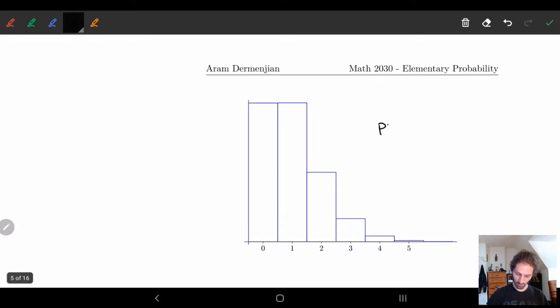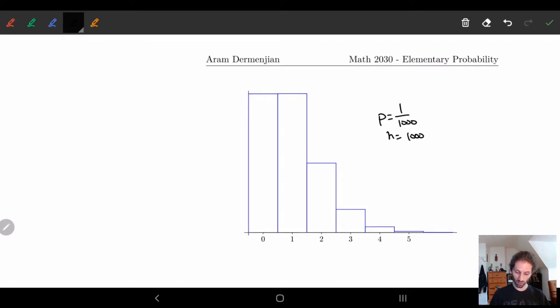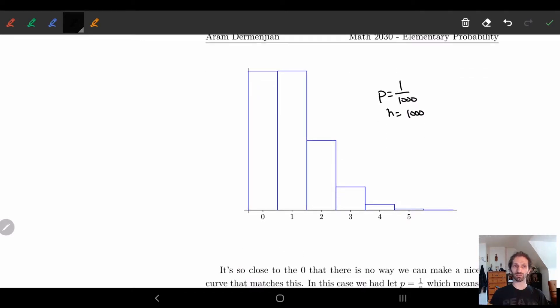So here I'll rewrite this again: p equals one over one thousand, n equals one thousand. So I have a one in one thousand chance that something occurs but n equals one thousand, so I'm really expecting this to happen either zero or one times, I'm not expecting too many times. You can see zero and one are the peaks and then everything else kind of goes away.